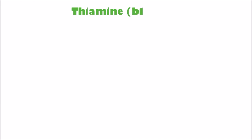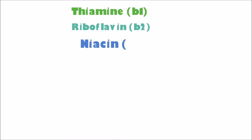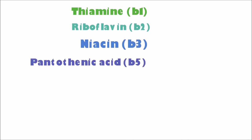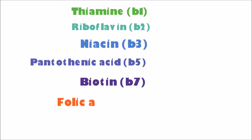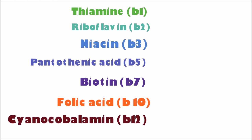Starting with the different types of Vitamin B: we have Thiamine B1, Riboflavin B2, Niacin B3, Pantothenic Acid B5, Biotin B7, Folic Acid B10, and finally Cyanocobalamin B12. So these are the different types of Vitamin B.